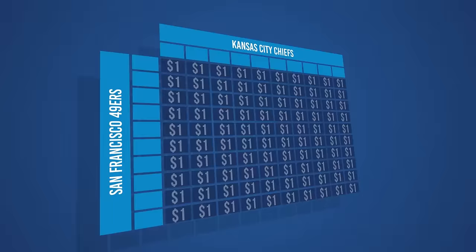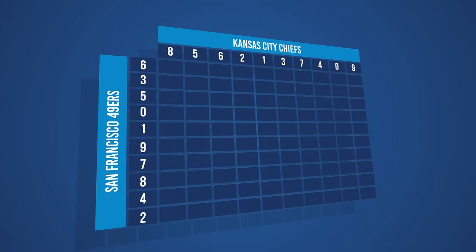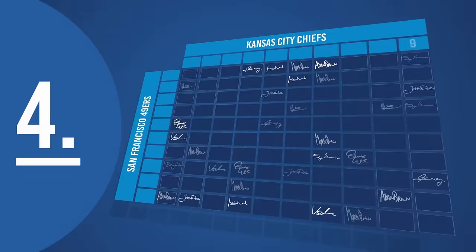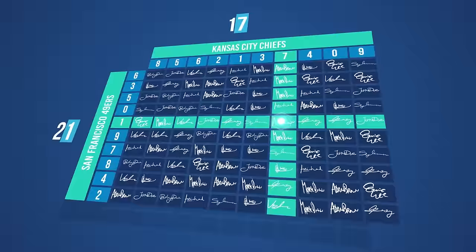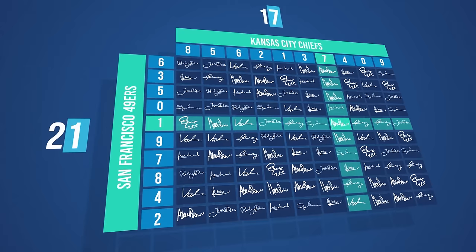Once all the squares are sold, the columns and rows are given random numbers from 0 to 9. The winner is determined by looking at the last number in each team's score. For example, if the 49ers beat the Chiefs 21 to 17, you need to look at those two numbers on the grid and confirm if that combination intersects in one of your squares. In this example, the square owner at Row 1, Column 7 wins the pool prize.